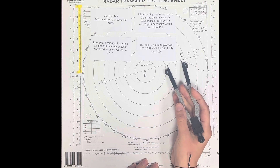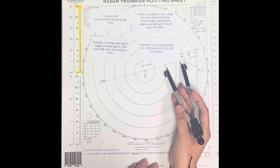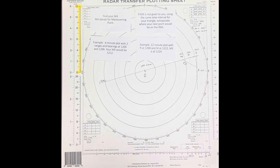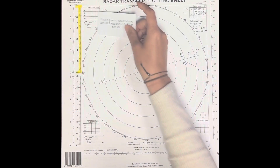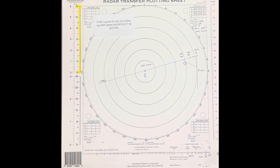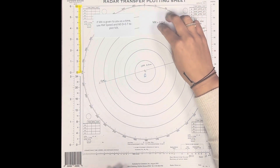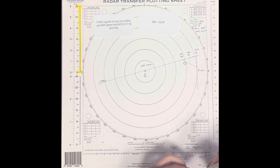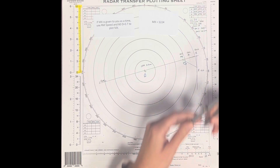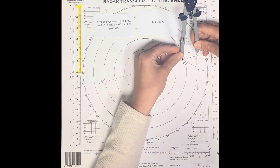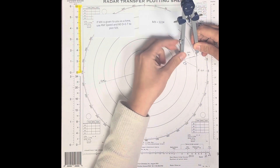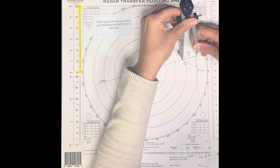Additionally, a 12-minute plot — which is what I am using — with R at 1200 and M at 1212, your MX would be 1224. If MX is given to you as a time, you could use your relative motion speed and the 60 D-Street formula to actually plot your MX. For this exercise, we were given an MX of 1224.